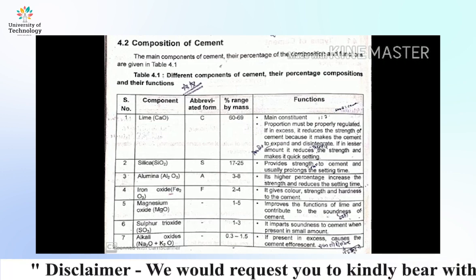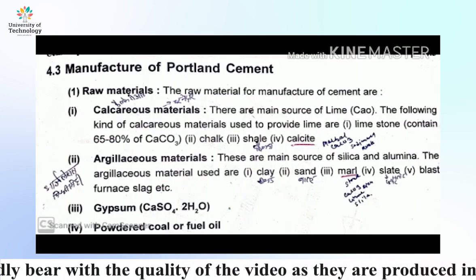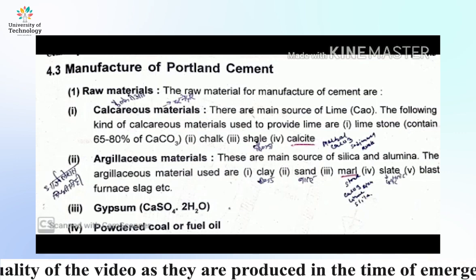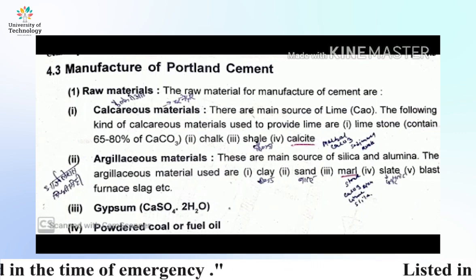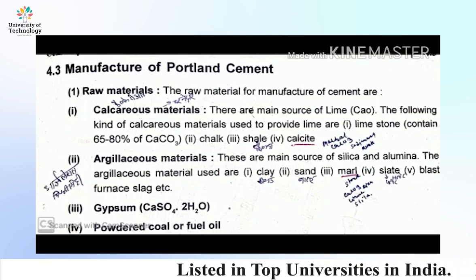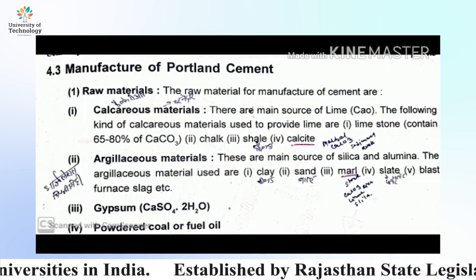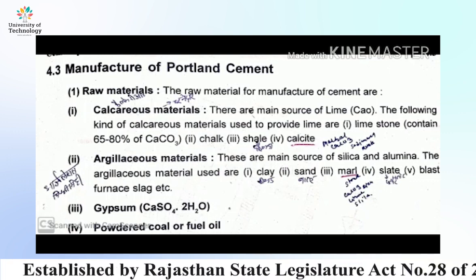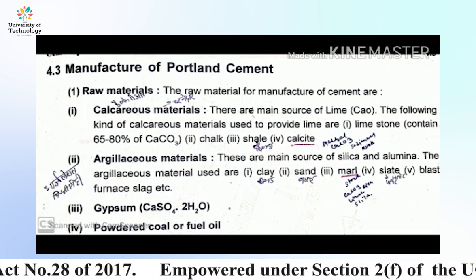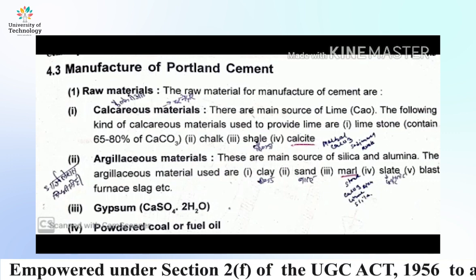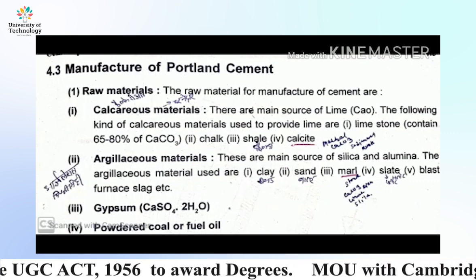Manufacturing of Portland cement — raw materials required: first is calcareous material, which is the main source of lime. The following kinds of calcareous material are used to provide lime: limestone (containing 65 to 80 percent calcium carbonate), chalk, calcite. These calcareous materials are the largest source of lime in cement manufacturing.